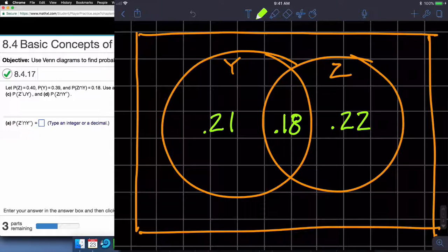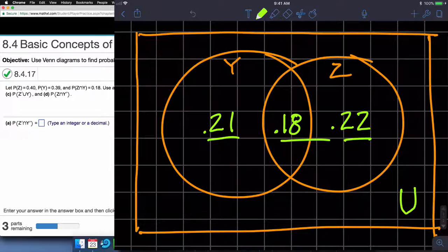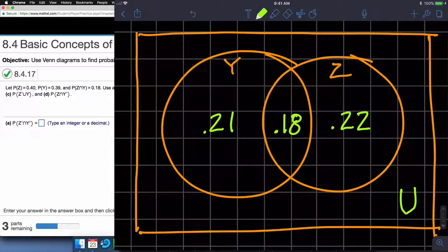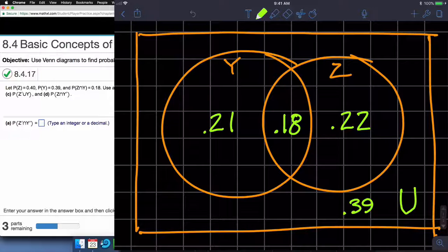So we do need to determine this as well. The universe has some probability. The probability that it's not Y or Z is what's left. So when I add these three together, I'm going to get some value, subtract that from the number 1. Or if you think of these as 21, 18, 22, take the sum of those numbers, subtract them from 100 and I'll get another decimal value. So 0.61 leaves me with 0.39 for the universe.